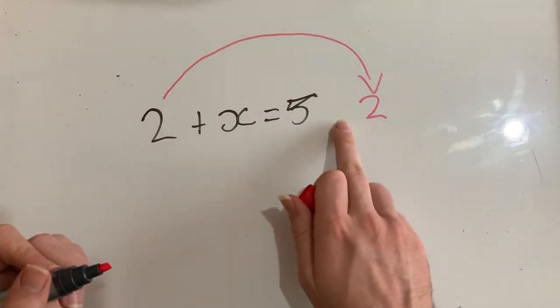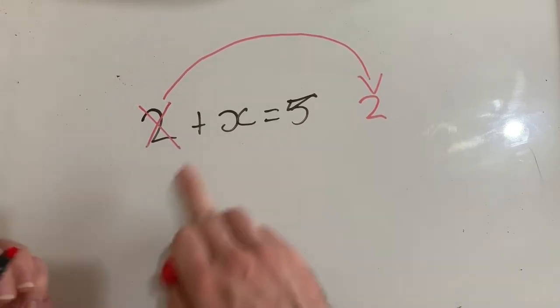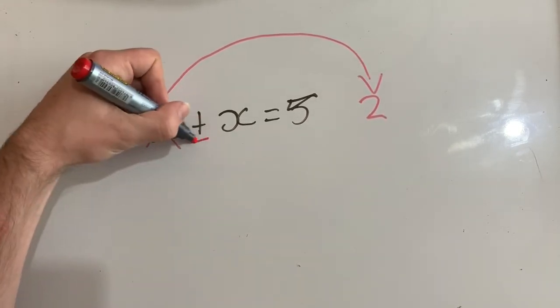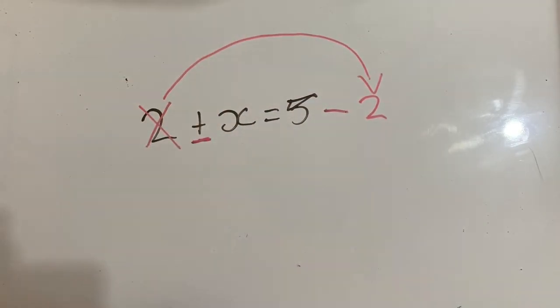So I would like the 2 to go here. But I need to know the operation. Now that will cancel this 2. That'll get rid of that 2. It's now on this side. And because I'm using addition here, I need to use its opposite, which is subtraction.